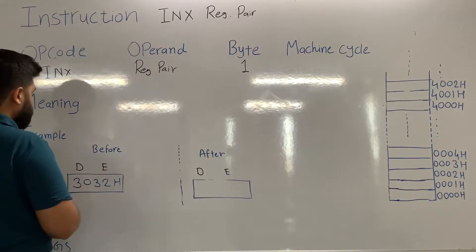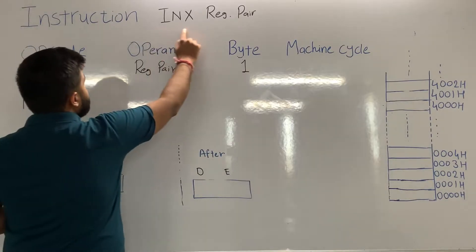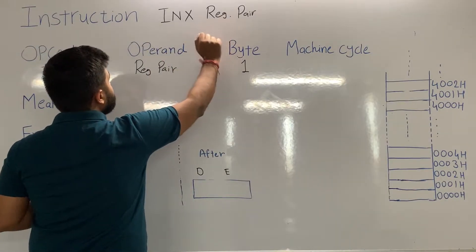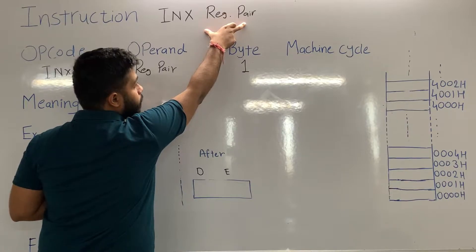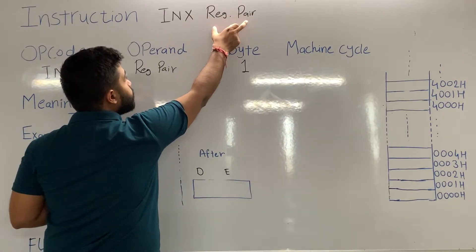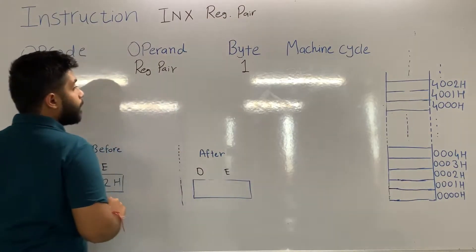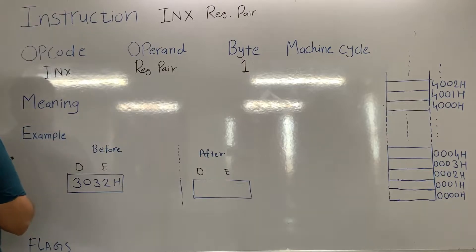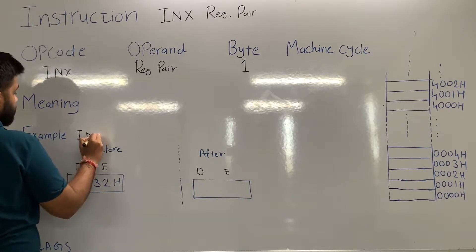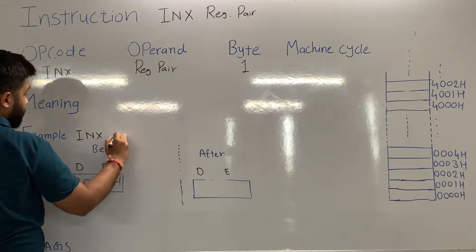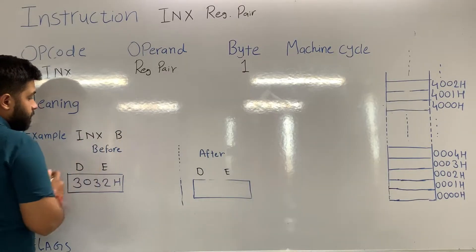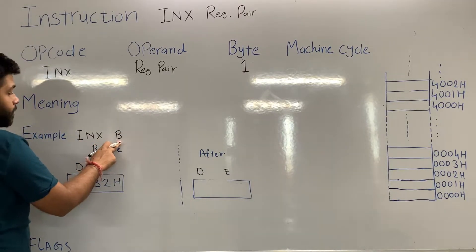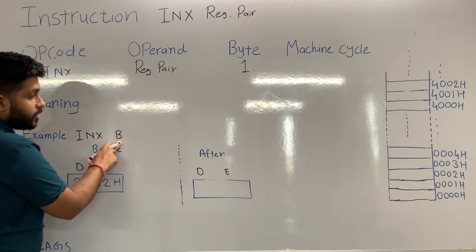The meaning of INX register pair is: increment the content of the register pair by one. For example, INX B means increment the content of the BC register pair by one.